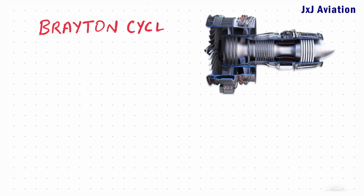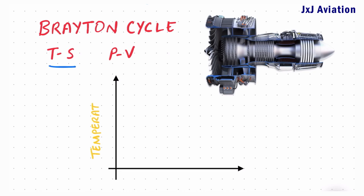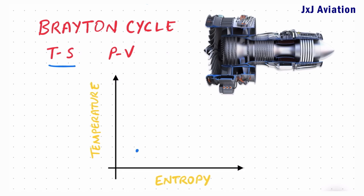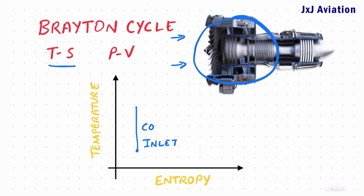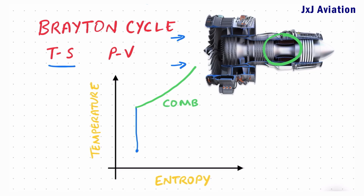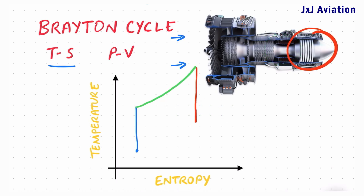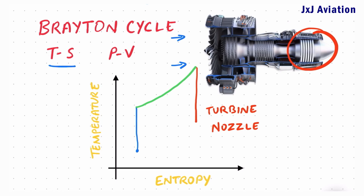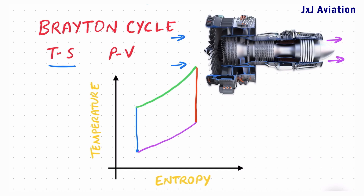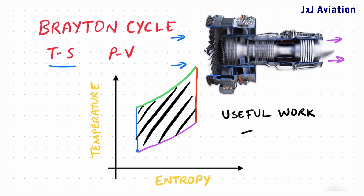Brayton cycle TS and PV diagrams. The TS diagram is a graph between temperature and entropy. This point represents the initial free stream condition of the air. The airflow in the inlet and the compressor is an isentropic process. In the combustion chamber, the temperature and the entropy increase. The expansion in the turbine and nozzle sections of the engine is again an isentropic process. After exiting the nozzle, the air returns to its initial conditions, closing the cycle. The area under the TS diagram is the useful work and thrust generated by the engine.